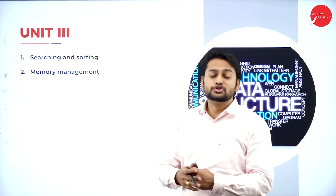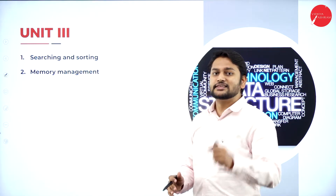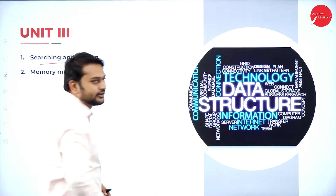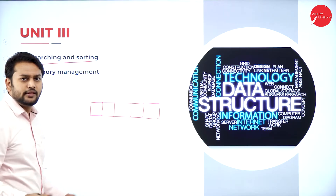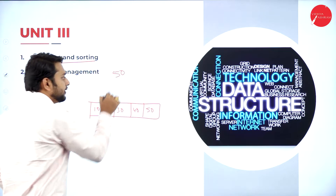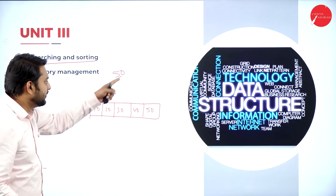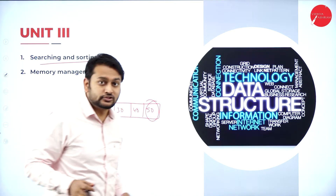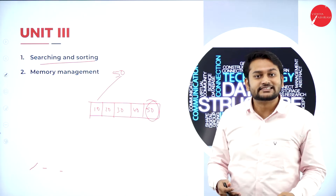Unit three covers a very interesting topic — searching and sorting. Those who studied computer science with C programming may have come across these before. Searching means: imagine I have an array with data elements and I need to search for element 50. I compare 50 with 10 — no match; compare with the next — no match; and so on, until I find a match. That process is called searching. I will be discussing the different types of searching.